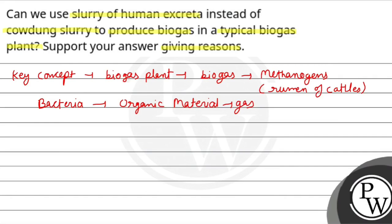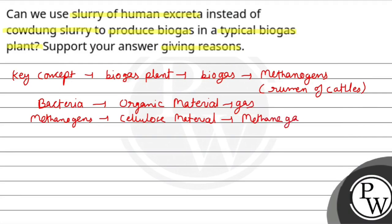What's different here? The methane gas is the same. This is the cellulose material — it grows on cellulose. What do we see here? Methane gas will be produced from this cellulose material. So which gas is mainly produced? Methane gas will be produced, along with CO2.